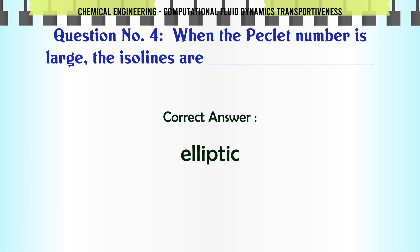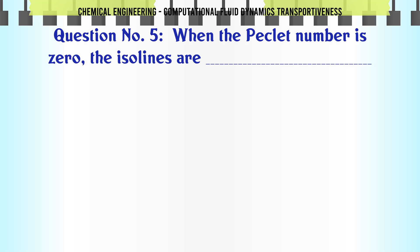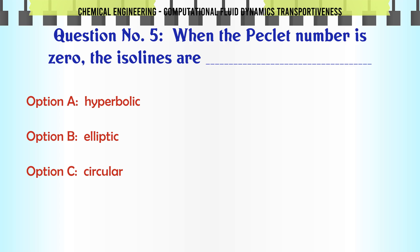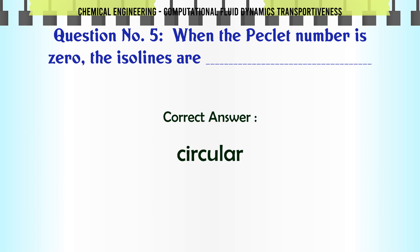When the Peclet number is zero, the isolines are: A. Hyperbolic. B. Elliptic. C. Circular. D. Parabolic. The correct answer is circular.